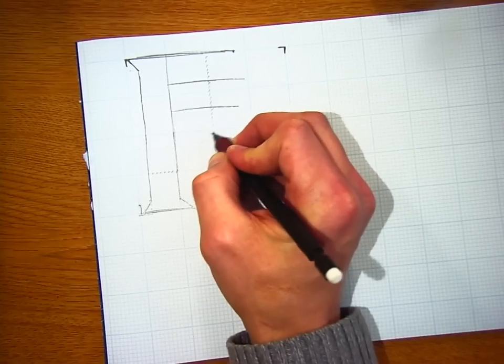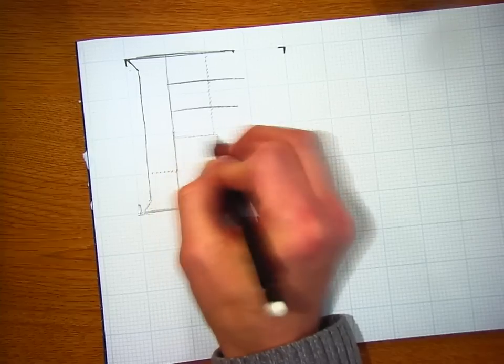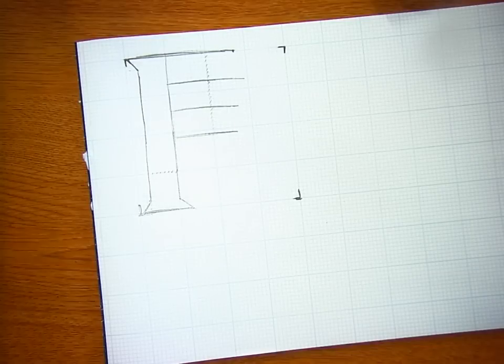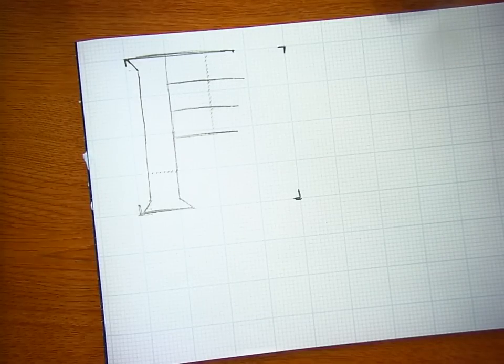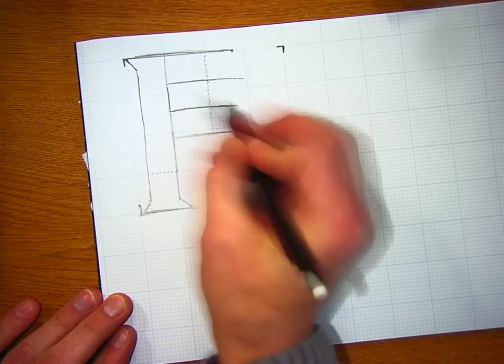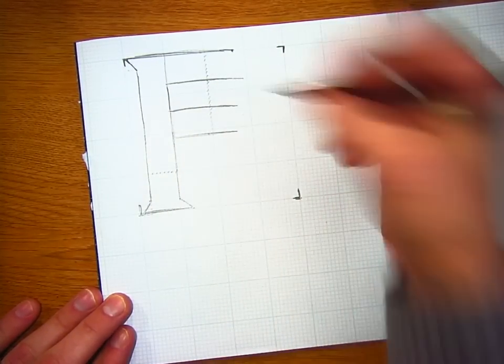1, 2, 3, 4, 5, 6, 7, and bring that across. So now I've ensured that all of the big parts of my letter here are the same thickness. My counter is the same thickness, and again, if it's just slightly off, it looks awkward.